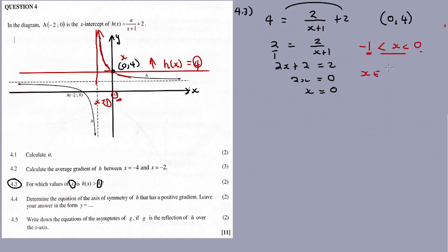x is an element of the open interval — minus one is excluded since it's the asymptote, and zero is excluded as well, because whenever x equals zero, h of x equals four, and we want h of x strictly greater than four, not equal to four.